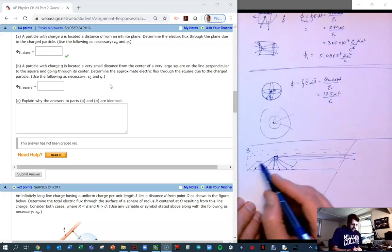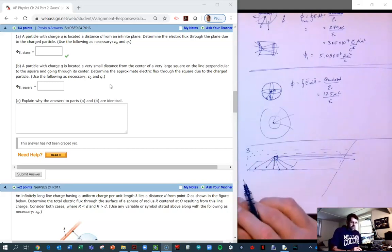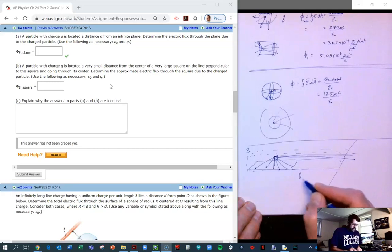Our Gaussian surface can mimic the surface that we're dealing with. So let's make our Gaussian surface be a box. Half of the flux will go through this bottom surface because it is so massive, it is so long.